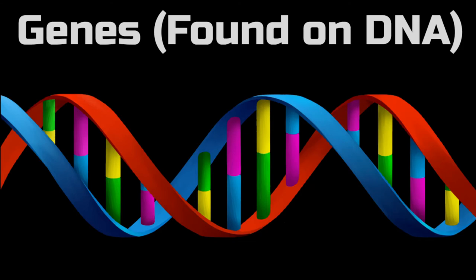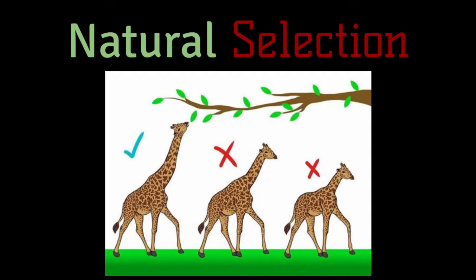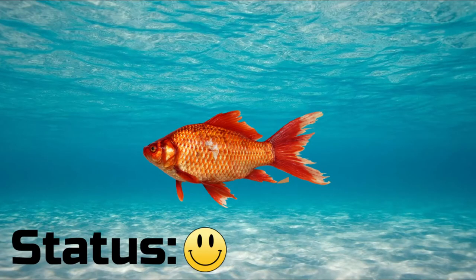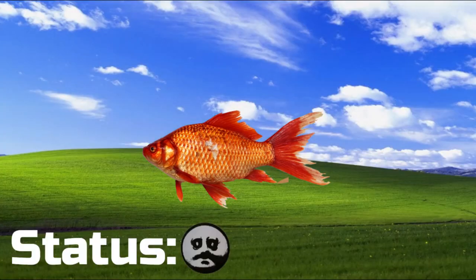However, evolution would not work without natural selection. Natural selection is the process in which animals with the most favorable traits will survive. Whether traits are favorable or not is usually determined by the environment the organism finds itself in. For example, gills are a beneficial adaptation for water-dwelling creatures, whereas on land, gills would not be favorable.